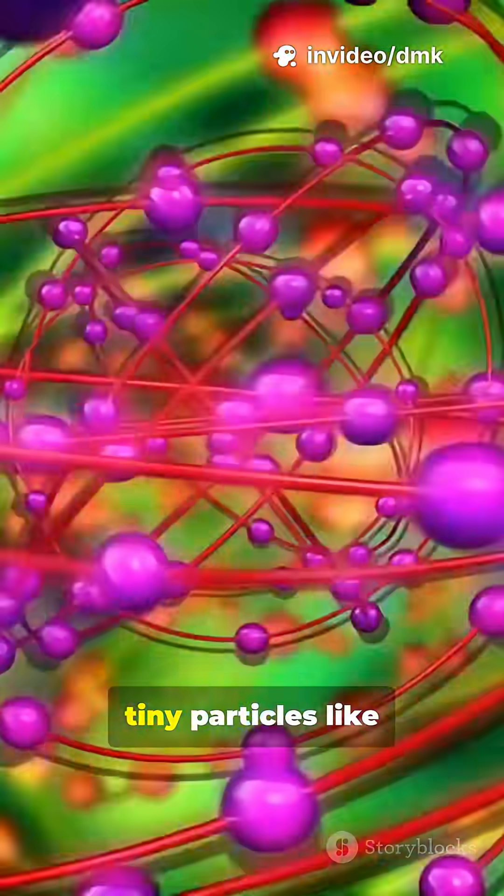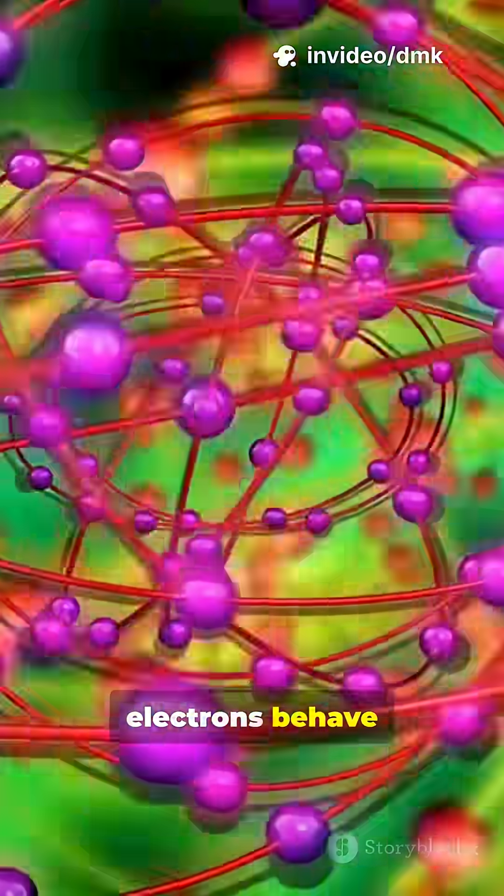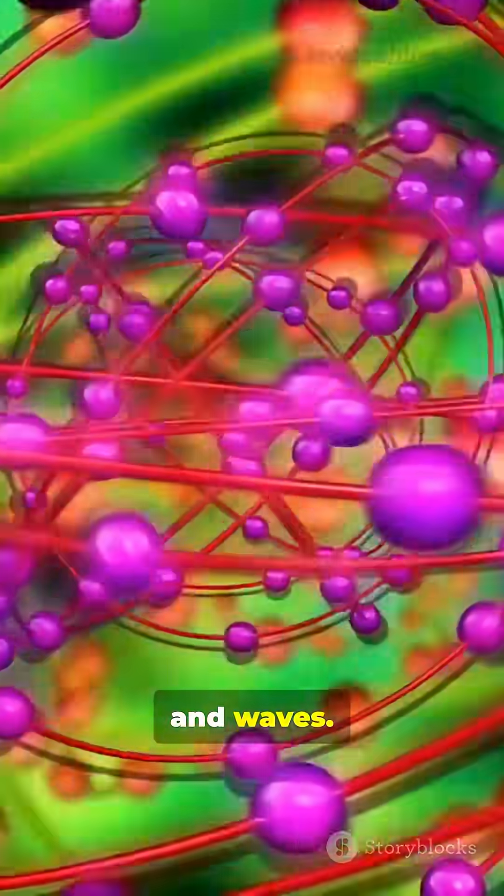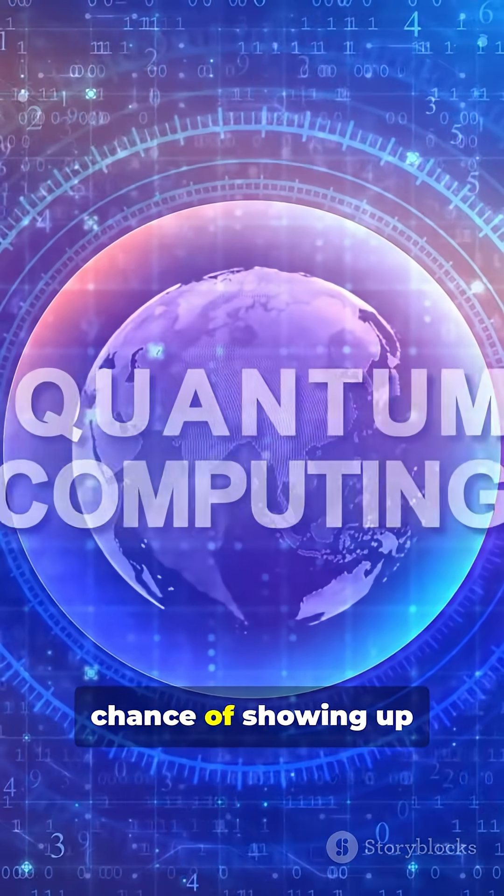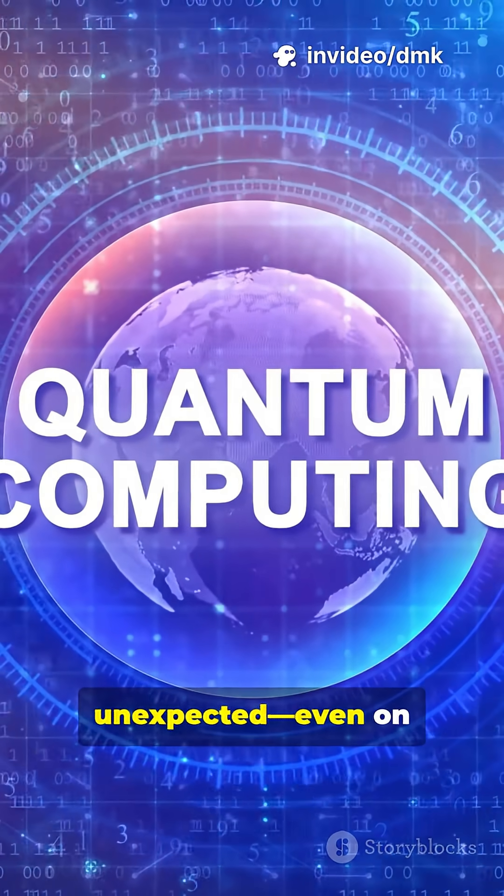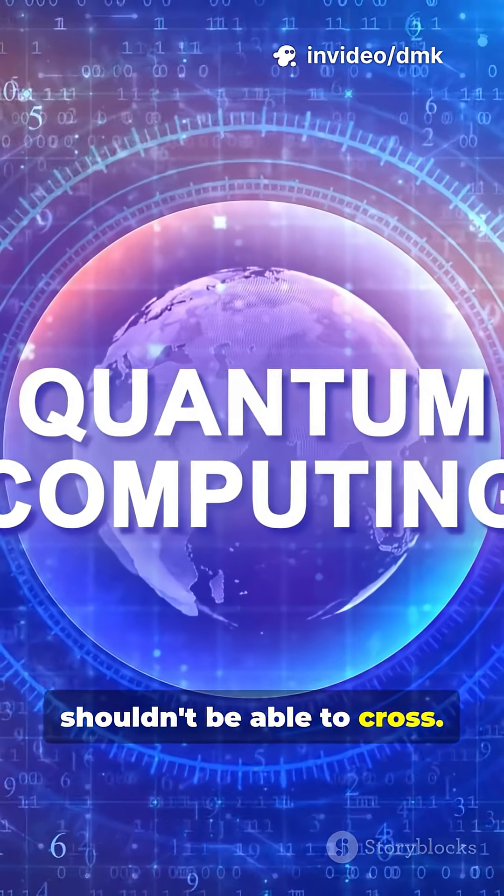But on the quantum level, tiny particles like electrons behave both like particles and waves. Their probability waves mean there's always a small chance of showing up somewhere unexpected, even on the other side of a barrier they shouldn't be able to cross.